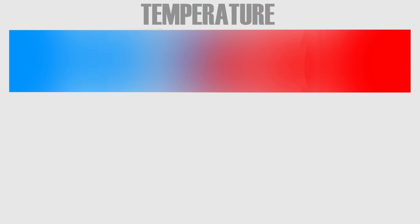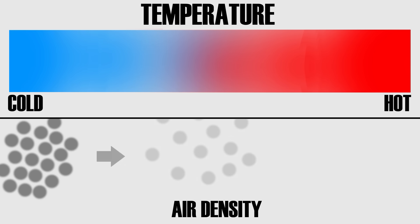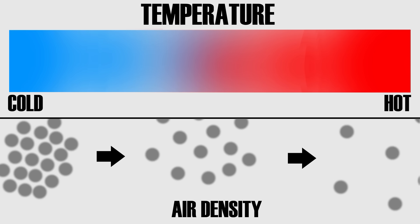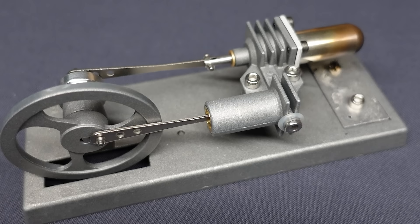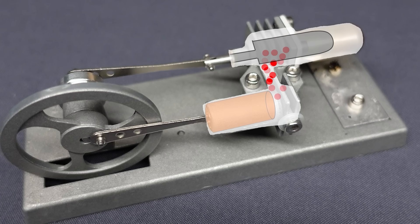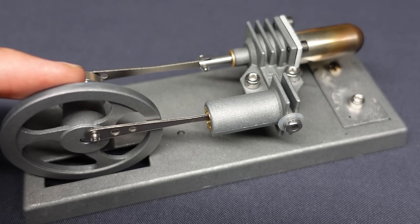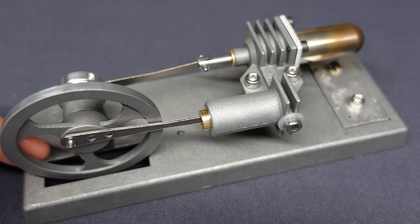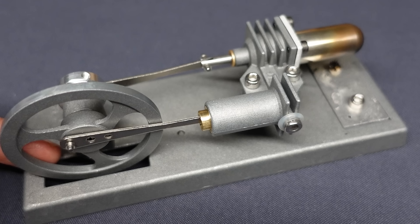To answer that, we have to follow the path of the air inside the engine while remembering that air density changes with temperature — the hotter the air, the less dense it is, the more it expands, and the more pressure it exerts on its surroundings. So air is heated at the heat source, it expands, and because the piston in this cylinder is a loose fitting, the air simply passes around it and moves through the passage between the two cylinders, where it meets the tight fitting piston. Because this piston is tight fitting, the air cannot go around it, and so it exerts its pressure on the piston, pushing it outward.